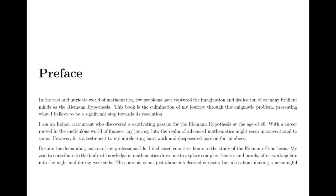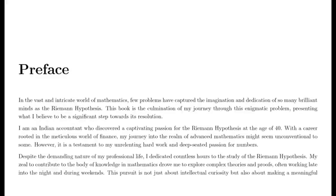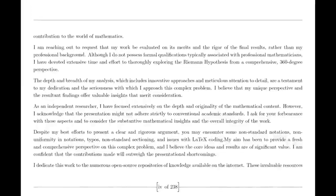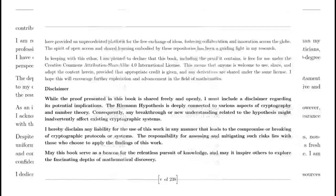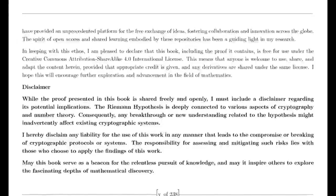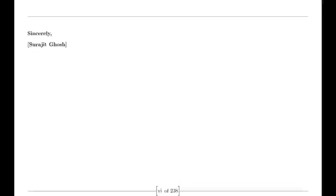We begin with the remarkable contributions of Leonard Euler. In the 18th century, Euler made groundbreaking discoveries in understanding infinite series. He introduced the idea that the harmonic series — the sum of the reciprocals of the positive integers — could be expressed as a product over prime numbers. This revolutionary insight linked the harmonic series to the complex properties of primes, and was one of the first indications of deep connections between primes and series.